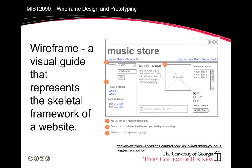A wireframe is generally a skeletal three-dimensional model in which only lines and vertices are represented. For user interfaces like those of websites or mobile applications, it's a visual guide that represents the skeletal framework of the user interface. Here we see an example of a wireframe for a music store website. Note where images might appear — we simply see a box with a label showing 'album art.' Where there might be text, we see labels indicating what that text might be, such as the artist's name and a description. The real text will be inserted later when the wireframe is actually implemented. Some details may also be added, such as labeling for navigation and input components like choosing an album. But mostly, it's a blueprint for the final design.